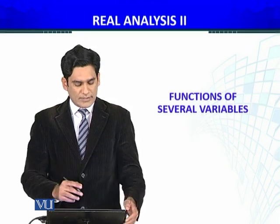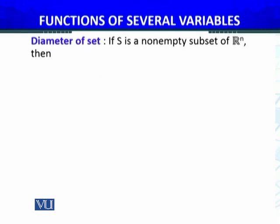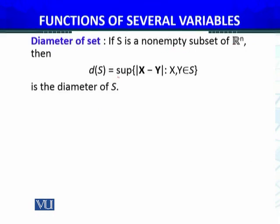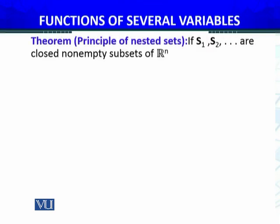इसको पहले define करेंगे, then we will discuss the principle of nested sets। If S is a non-empty subset of Rn, then the diameter of S is the largest value of |X − Y|, जो कि distance है between any two points belonging to S। S में से कोई से दो points लें, उनका distance calculate करें — there are infinitely many points in S — जो सबसे बड़ा distance है, उसको diameter of S कहेंगे। If the diameter of S is less than infinity, S is bounded। अगर diameter infinite आ जाए, तो the set is unbounded in Rn।